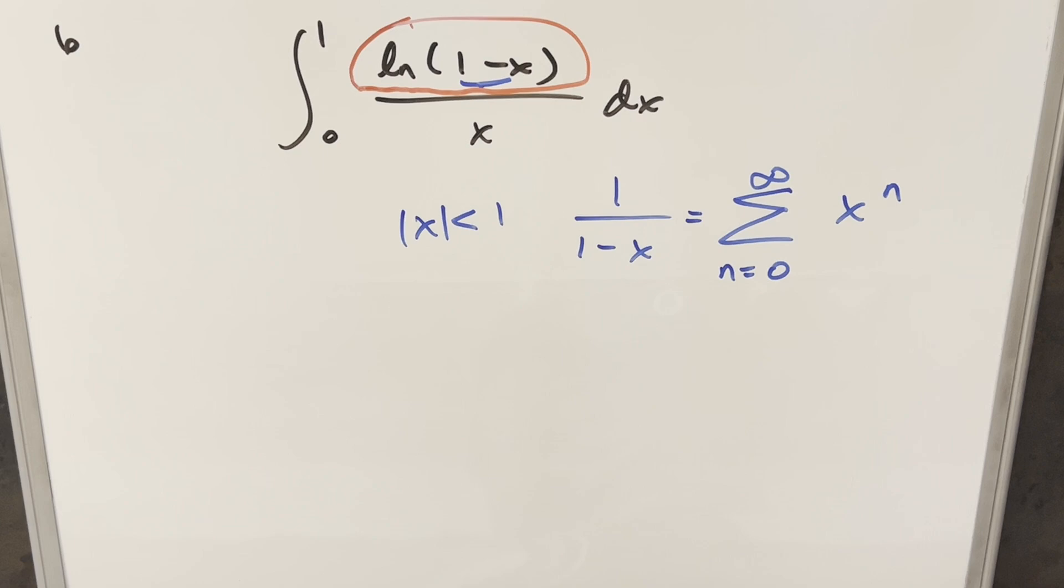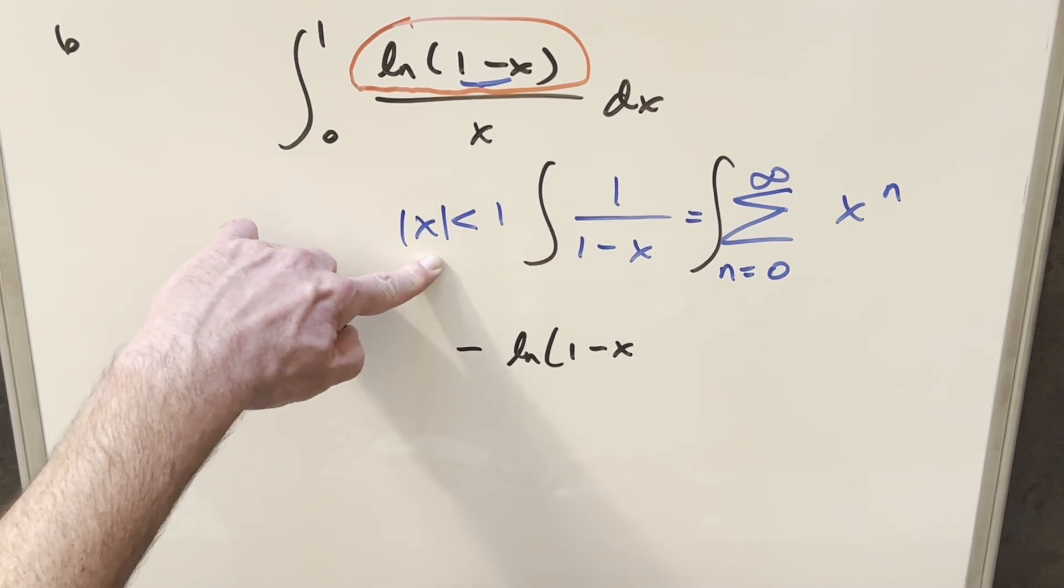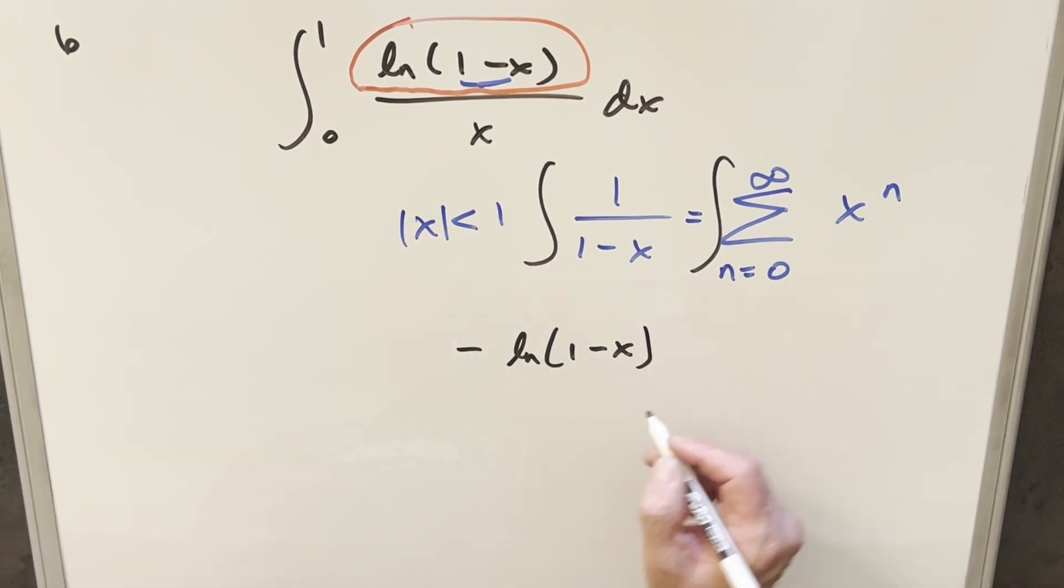But then what I can do is actually just integrate on both sides of this. When I do that, we're going to get back this. Well, there's going to be a minus sign, but when you integrate this, you actually get minus natural log. I'm going to drop the absolute value because we already determined we're less than one here. So this is just going to be parentheses.